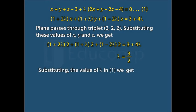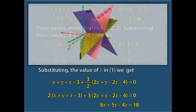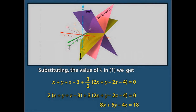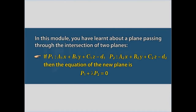Substituting the value of lambda in Statement 1, we get the equation as 8x plus 5y minus 4z equals 18. In this module, you have learnt about a plane passing through the intersection of two planes. If P1 represents a1x plus b1y plus c1z minus d1 and P2 represents a2x plus b2y plus c2z minus d2, then the equation of the new plane becomes P1 plus lambda P2 equals 0.